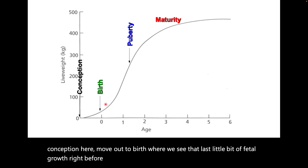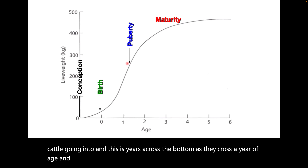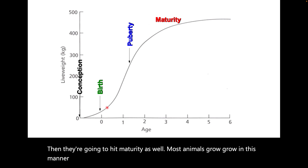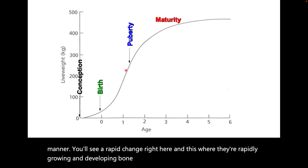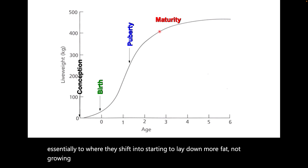Moving from birth — and these are for cattle, with years across the bottom — as they cross a year of age and hit puberty, then they're going to hit maturity as well. Most animals grow in this manner. You'll see a rapid change here where they're rapidly growing and developing bone and muscle and their frame, essentially, shifting into starting to lay down more fat as they approach maturity.